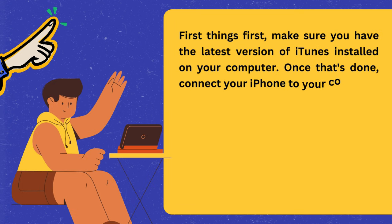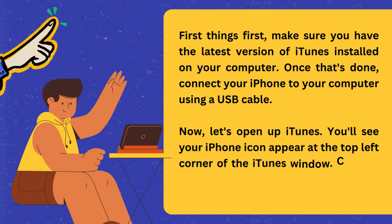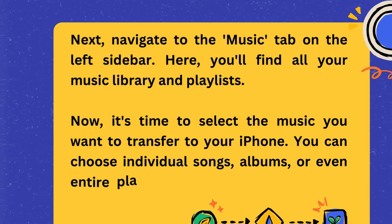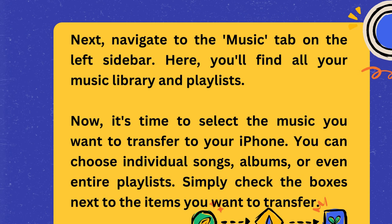You'll see your iPhone icon appear at the top left corner of the iTunes window. Click on it to select your device. Next, navigate to the Music tab on the left sidebar. Here, you'll find all your music library and playlists.